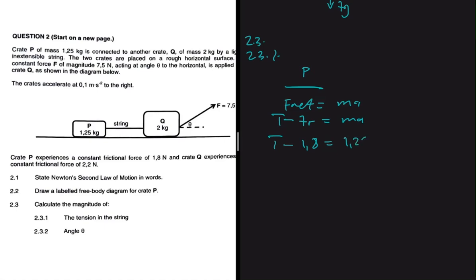This will be equals to the mass which is 1.25 multiplied by the acceleration which is 0.1. So the tension is going to be 1.25 multiplied by 0.1 plus 1.8, and that should be equals to 1.925 newtons.